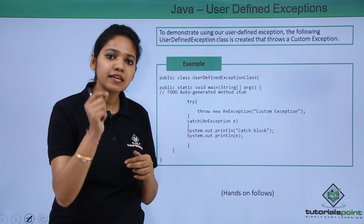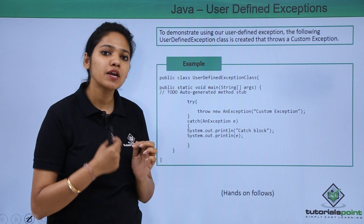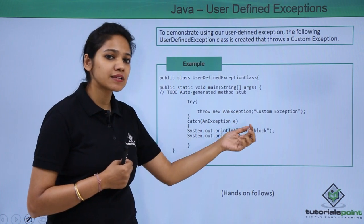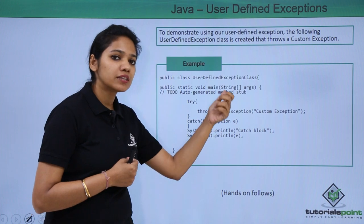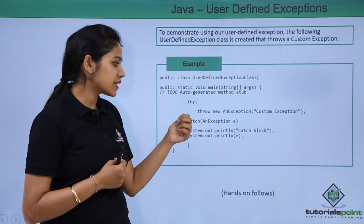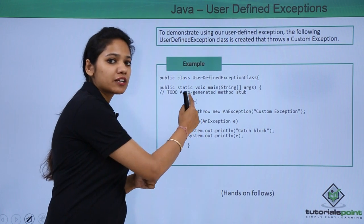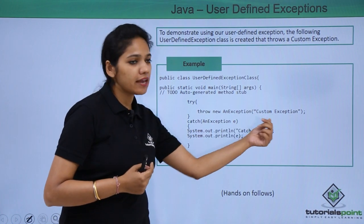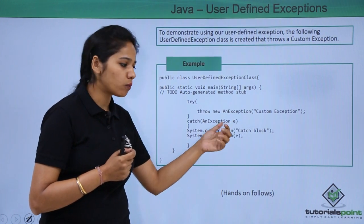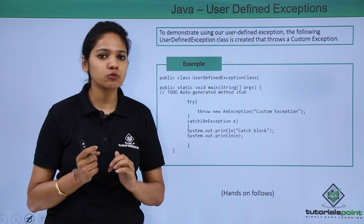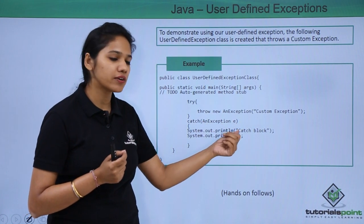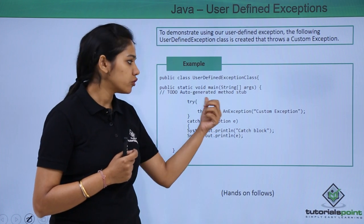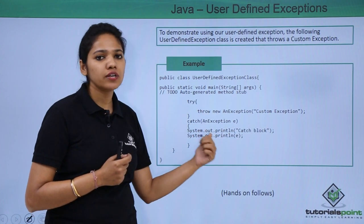We write the throw keyword followed by the new keyword, then the exception name AnException, and then the information you want to provide. In case of a file-not-found exception, you provide the detail in brackets as E — that E will hold the information. Here we write the customized exception message. So, how do you throw an exception? With the throw keyword: write throw, new, the exception name, and the information. If this exception can be handled, it should be caught by your catch block.